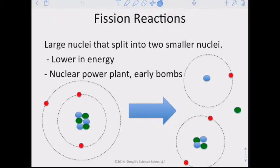A fission reaction is a type of nuclear reaction. Large nuclei split into two smaller nuclei. It's lower in energy than a fusion reaction, but still a great deal of energy compared to a chemical reaction. Nuclear power plants and early atomic bombs were fission reactions.